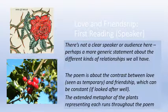There isn't a clear speaker or audience here — it's not very specific. Perhaps it's a more generic statement about the different kinds of relationships we all have. The poem is about the contrast between love, which is seen as temporary, and friendship, which can be constant if looked after well. The extended metaphor of plants representing each runs throughout the poem. An extended metaphor is one that runs through a whole piece of work, so here love and friendship are both compared to plants — add that to your poetry terms at the back of your books.